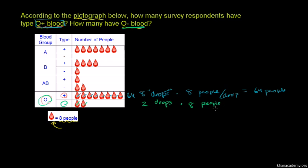And there are 8 per drop. So 2, O negative, times 8. 2 times 8 becomes 16. So there are 16 people. So 16 people have O negative blood.